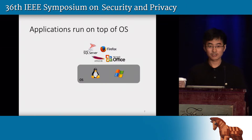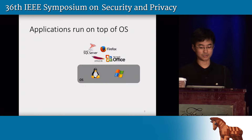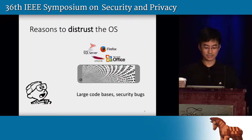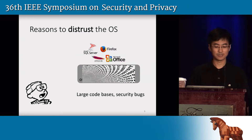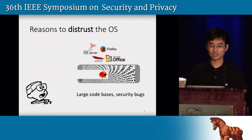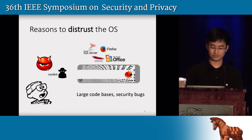In a typical computer system, applications run on top of an operating system, and the OS has been considered the software root of trust. However, there are often reasons why we don't want to trust the OS. First, commodity operating systems have very large code bases, and people have found endless security bugs in them. These bugs leave vulnerabilities in the system which might enable some external attacker to install a rootkit that steals the user's data.